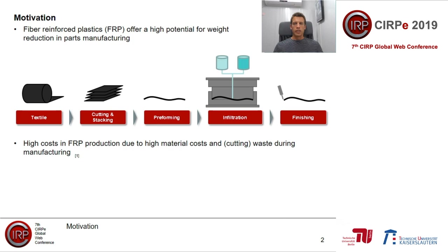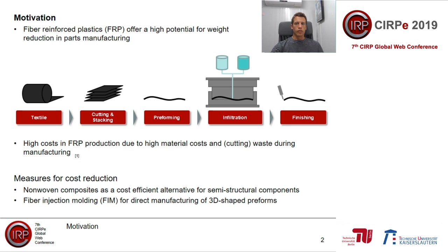In spite of the potential, we face the challenge that FRP production has high costs. These costs arise from the high material costs for carbon fiber production and the textile semi-finished product. There are also big losses due to cutting waste during the manufacturing process. For use in semi-structural components, we see potential in non-woven composites instead of atlas fiber FRP, especially using glass fiber or recycled carbon fibers. Another possibility for cost reduction is the direct manufacturing of 3D-shaped preforms with the fiber injection molding process, replacing the first three process steps.